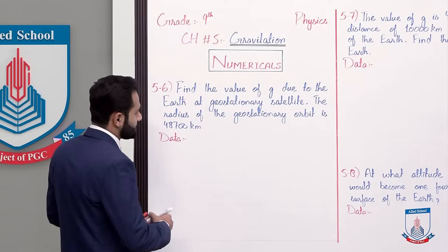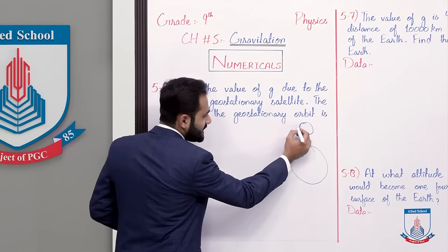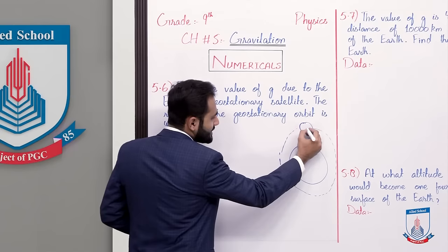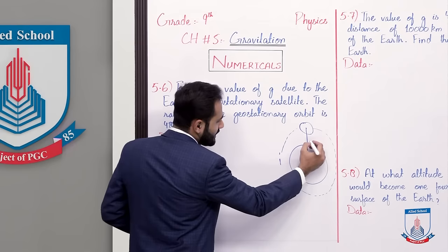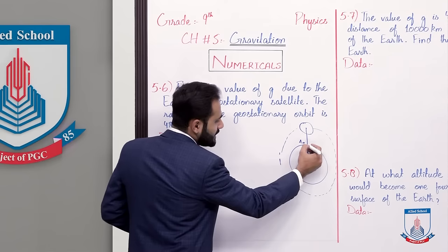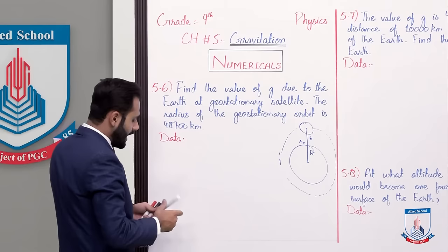Let's suppose there is a geostationary satellite — if this is the Earth, the satellite is present here and this is its full orbit in which it has to rotate. The radius given to us is from the Earth's center all the way to the satellite, that is r naught. This equals the radius of the Earth plus the height from the surface to the satellite. In this numerical, r plus h is given.